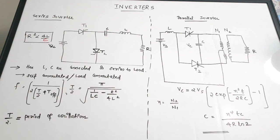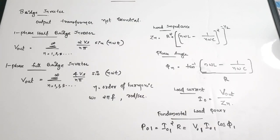Next we are going to see about bridge inverters and their various types. The bridge inverter has an advantage: it is again used for conversion of DC to AC, but it does not require a transformer. We have seen that for parallel inverters a transformer is required, but for bridge inverters it is not.